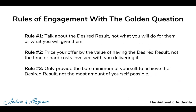Rule number one of the golden question: talk about the desired results, not what you will do for them or what you will give them. When you pile a whole bunch of deliverables and talk about what you're going to do, you often lose them. As Russell Brunson would say, you start doing 'technobabble' — speaking in the language of your expertise which they're not aware of. You overwhelm them and they get lost. Instead, talk about what they're actually getting out of it — the desired result.